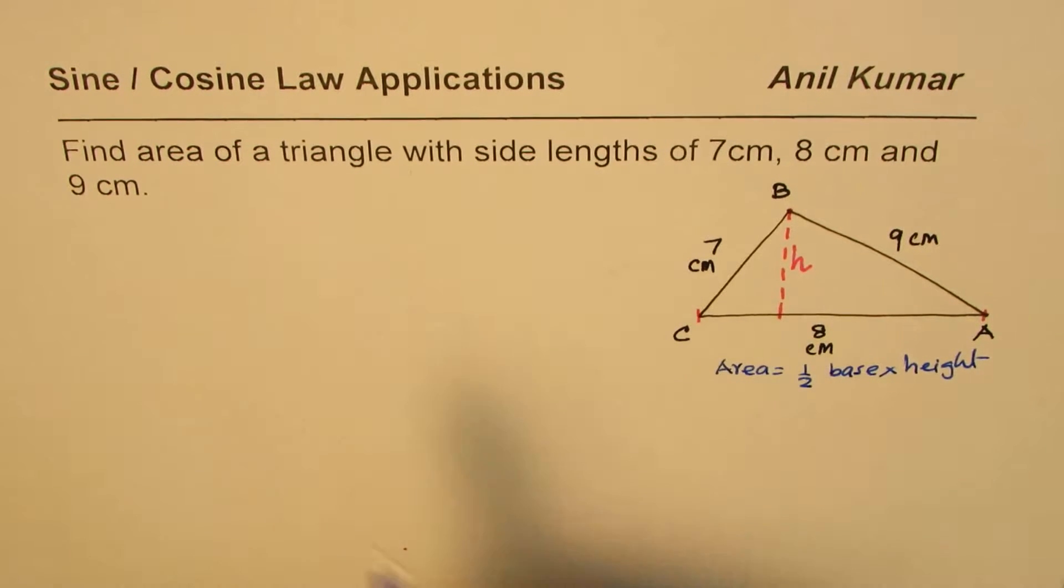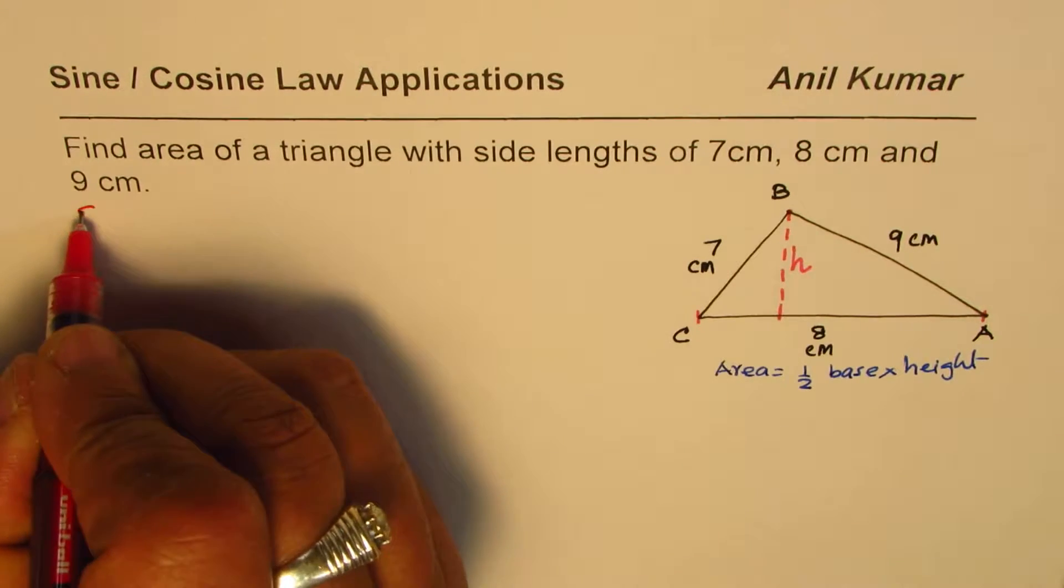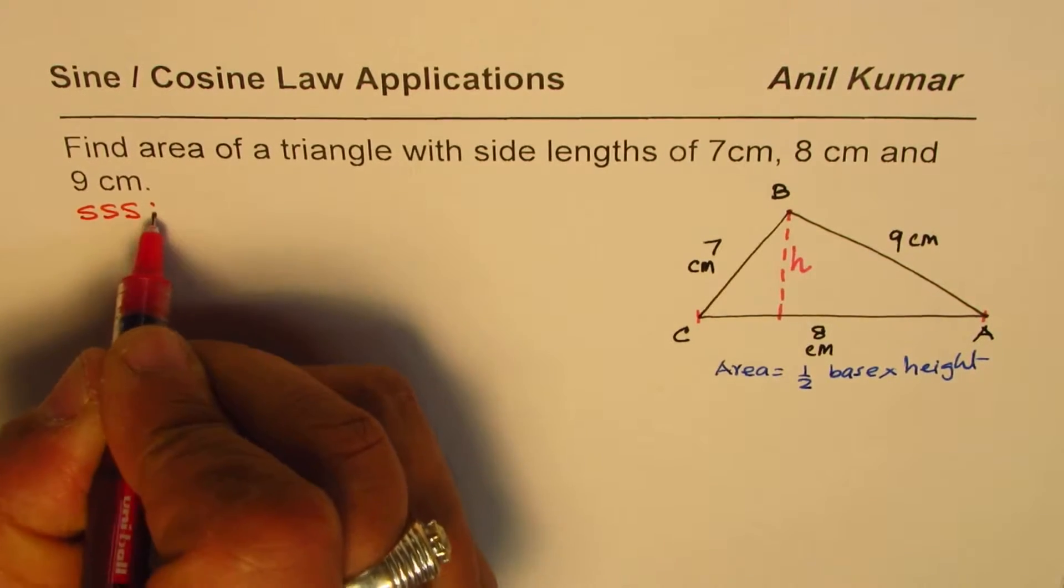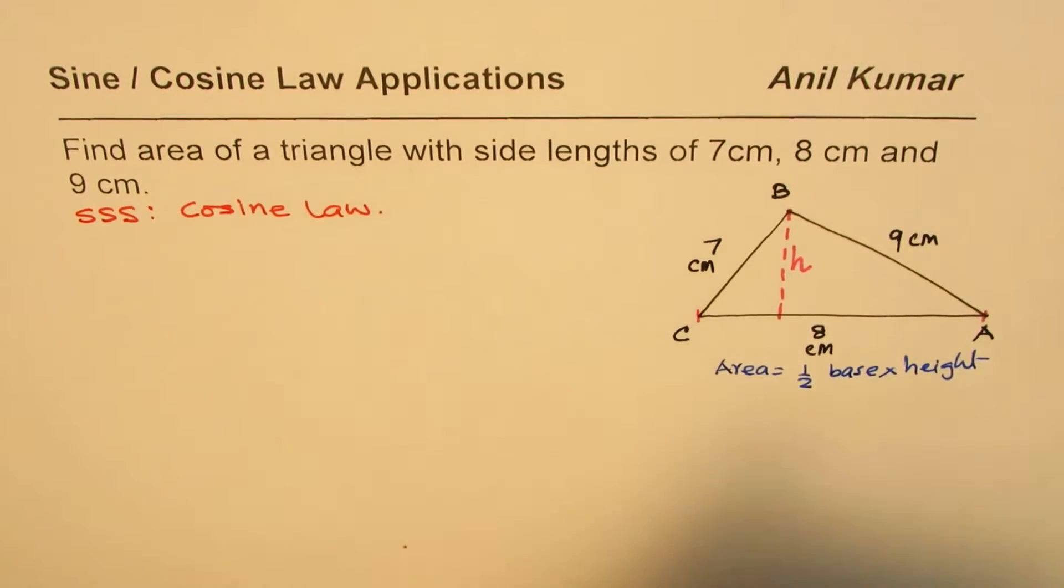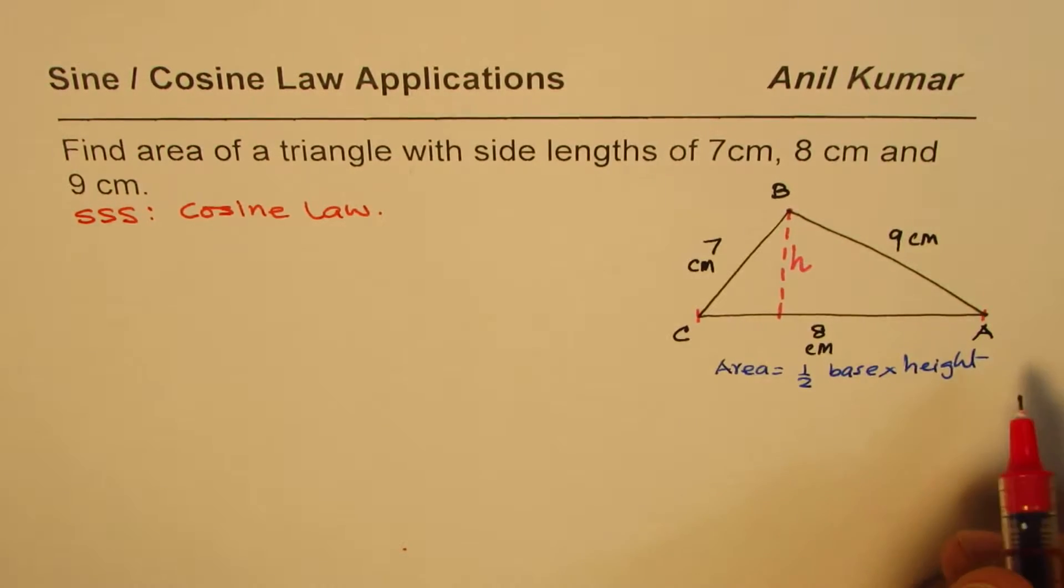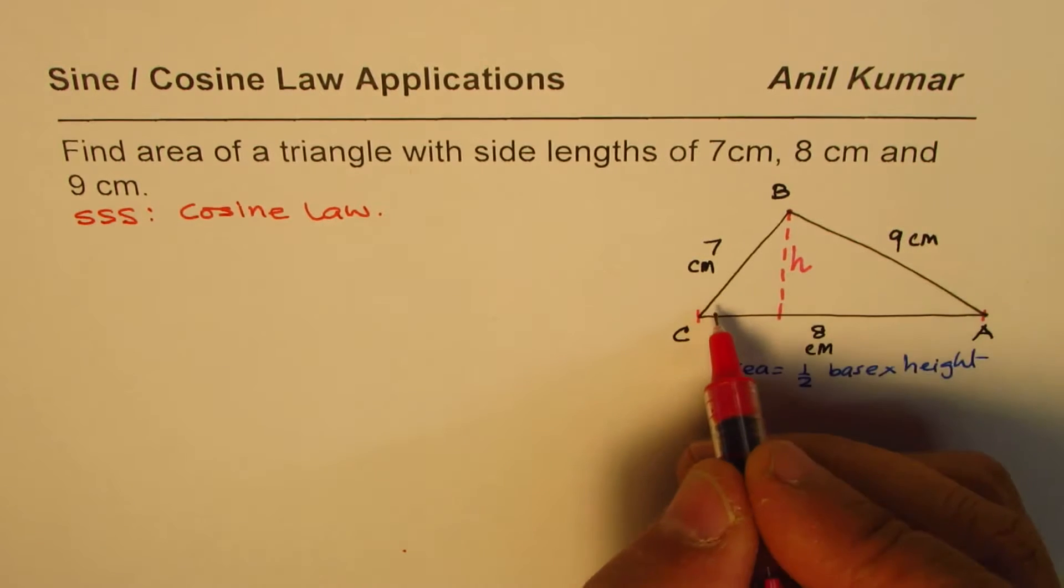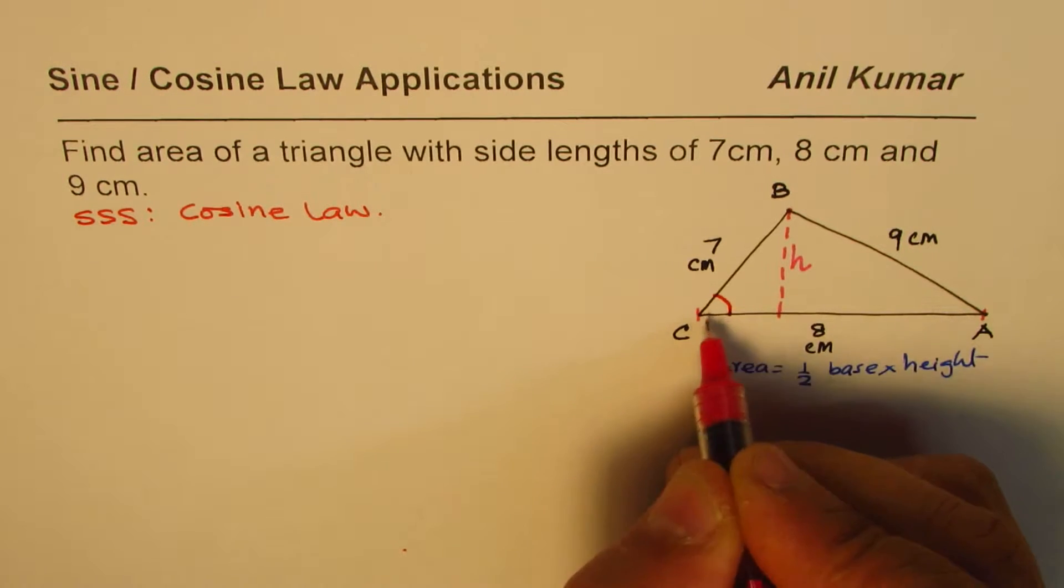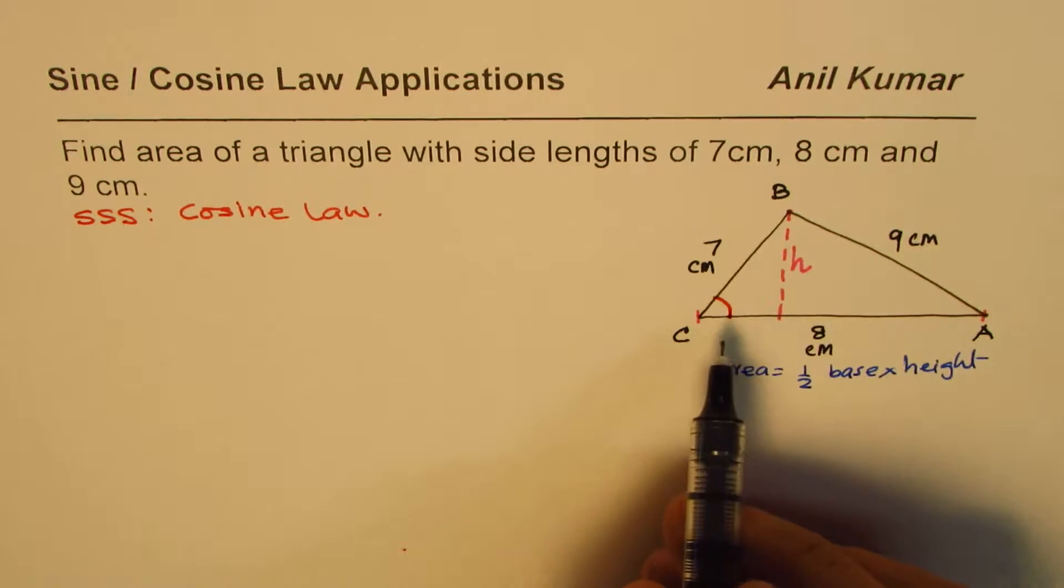So let's begin. First step: we are given three sides, so when we are given three sides, what to use? Cosine law, perfect. Now which angle should I find? We could opt for any. Let's say let's find the angle C. Now if that is the angle which we want to find, in that case how does the formula work?